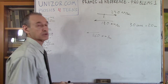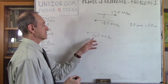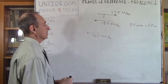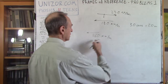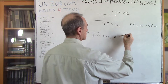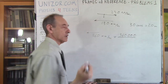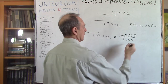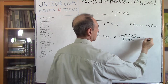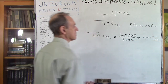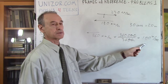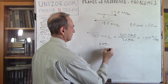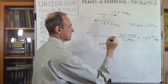Considering the length is 600 meters, all we have to do is convert 360 kilometers per hour into meters per second. 360 kilometers per hour is 360,000 meters divided by 3,600 seconds, which is 100 meters per second. With a speed of 100 meters per second, the 600-meter train will pass in 600 divided by 100. Length divided by speed gives a time of 6 seconds.